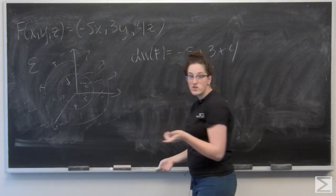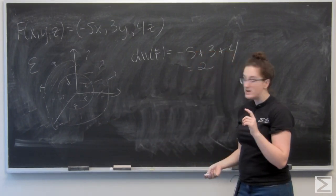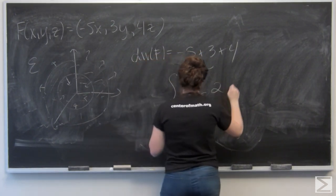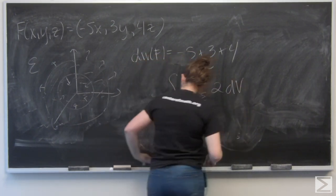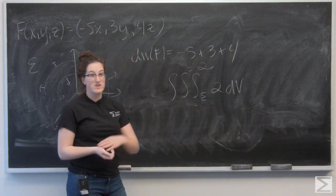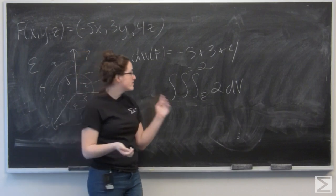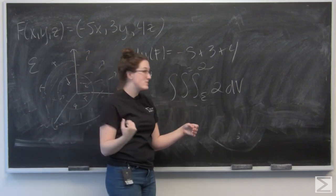And then I want to integrate that over the volume of E. And since the divergence is a constant, I don't actually need to worry about changing into spherical coordinates or actually evaluating that integral. I can just multiply by the volume of my region E.